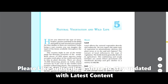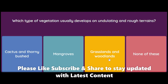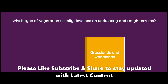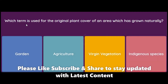Let's read it out. It is written in the previous book: the undulating and rough terrains are areas where grasslands and woodlands develop and give shelter to a variety of wildlife. So the answer is grasslands and woodlands.